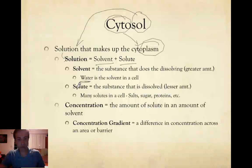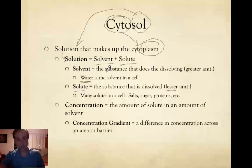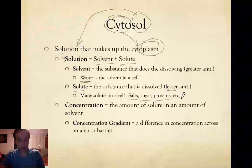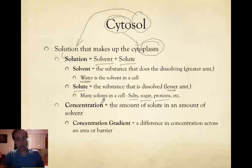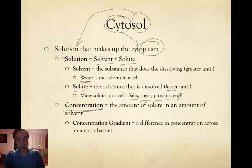We mix into the solvent the solutes. Solutes are the substances that get dissolved — generally you have a lesser amount of them compared to the water. There are lots and lots of different solutes in the cell: salts, sugars, proteins, steroids, fatty acids, amino acids, monosaccharides, polysaccharides — lots of different solutes. Now if we want to describe the amount of solute that's in the cell, we call that a concentration. Concentration is just the amount of solute in the amount of water — it's a number.